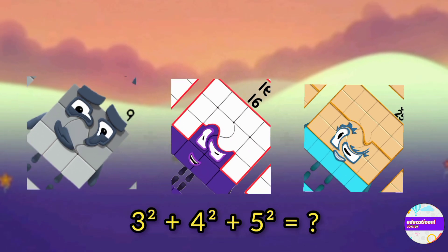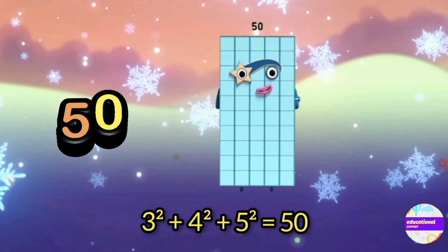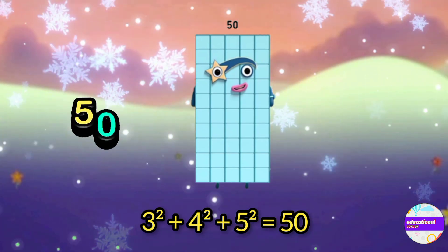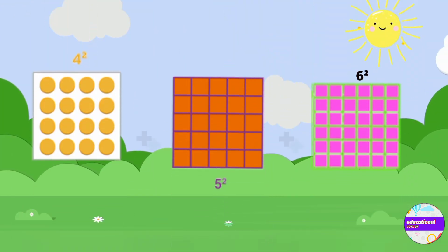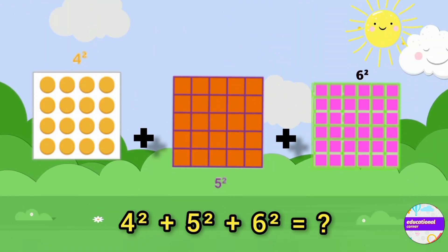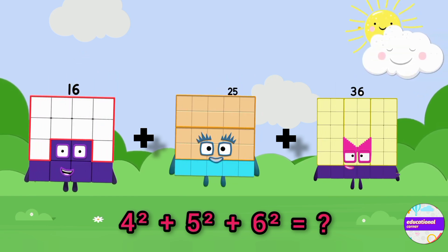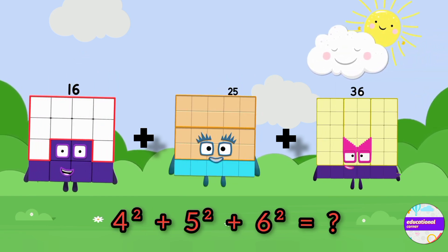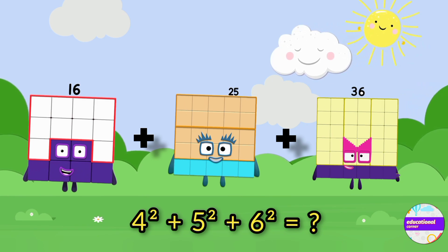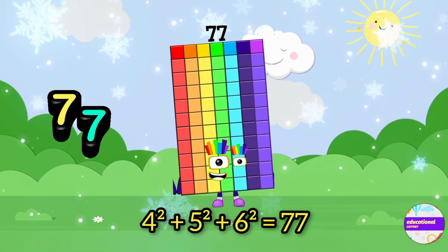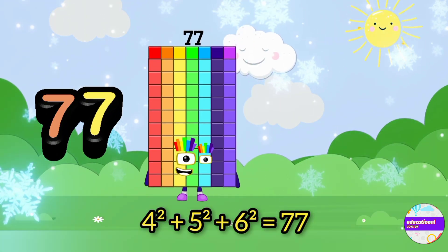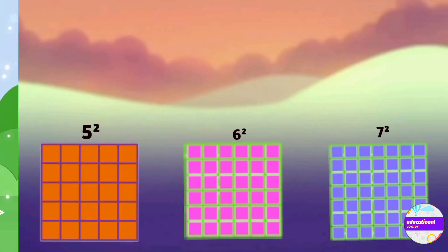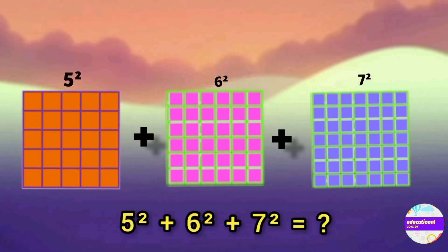Let's do another: four, five, six squares. Four squared is sixteen, five squared is twenty-five, and six squared is thirty-six. Add them together — it's seventy-seven. Now let's try five, six, seven squares: twenty-five, thirty-six, forty-nine.